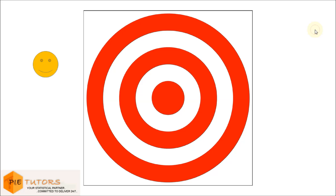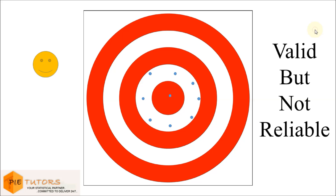The second person fires all his bullets and it is observed that all his bullets hit uniformly around the center. The firing consistency for this person is low, but on average the firing accuracy is high. This scenario is analogous to a valid but unreliable measure.